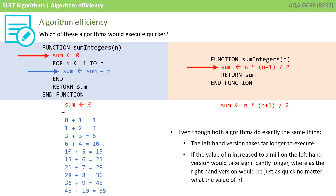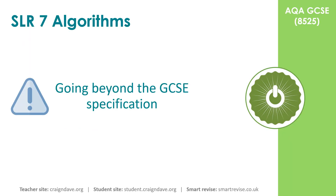Even though both algorithms do exactly the same thing, the left-hand version takes far longer to execute. Indeed, if we take this to the extreme and imagine increasing the value of n to a million, then the left-hand version would take significantly longer, whereas the right-hand version would be just as quick no matter what value of n was entered. That is certainly enough for the GCSE specification to appreciate that, although many algorithms can be written to perform the same purpose, it doesn't necessarily mean they are all as efficient as each other.